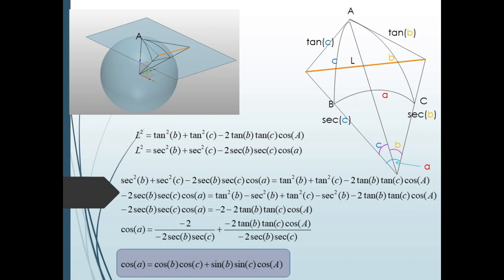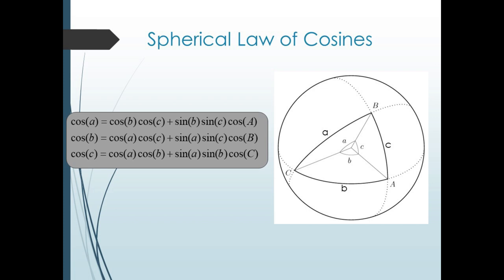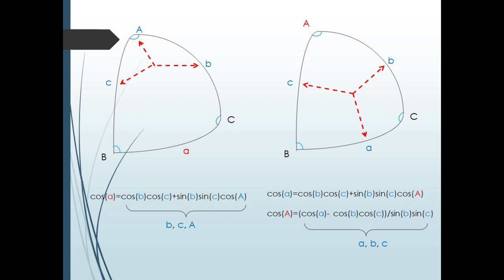This is one of the three versions of the law of cosines. The other two follow by moving the tangent plane to vertex B or C. Notice the same parts are being related here as with the planar law of cosines: if we know all the parts of a particular vertex, we can find the opposite side; similarly, if we know the three sides, we can find any vertex angle. The versions for vertex B and C are shown here also.